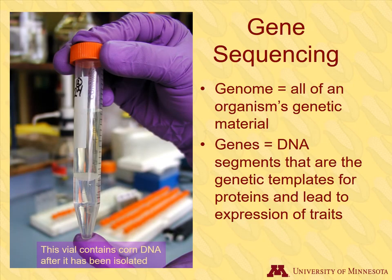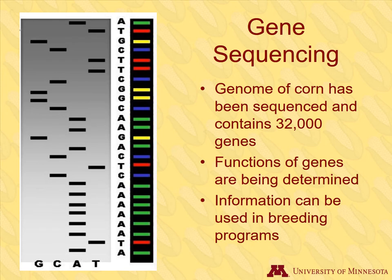Let's define two terms that will help us understand gene sequencing. The genome is an organism's entire genetic material, or all the genes present in that organism. Genes are segments of DNA that provide the genetic templates for synthesis of proteins that lead to the expression of particular traits. In 2009, the genome of corn was sequenced, meaning that the order of the subunits of its DNA has been determined. Corn contains about 32,000 genes, which is an amazing amount when you consider that humans have around 20,000. Scientists are working on identifying the sequences and functions of the corn genes associated with specific characteristics, and this important information can be used in corn breeding programs.